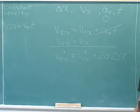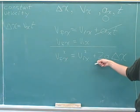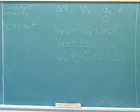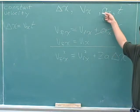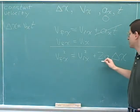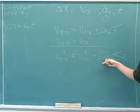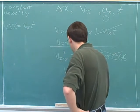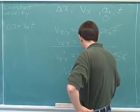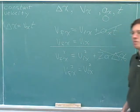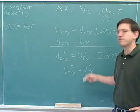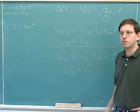This equation is also not really very useful for constant velocity. The problem is that the acceleration is zero. Since the acceleration is zero, this term here is just going to drop out because the acceleration is zero. And we're just left with V final squared equals V initial squared. That should have been kind of obvious because we know that V final is V initial.